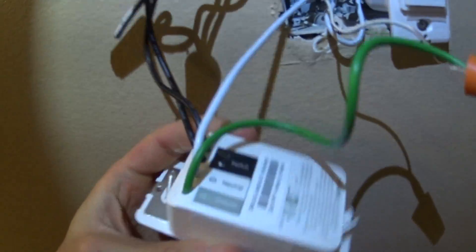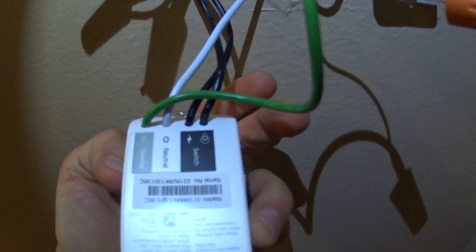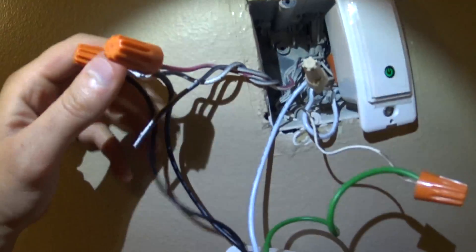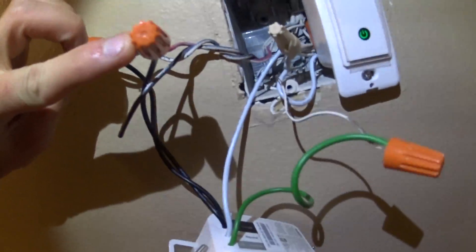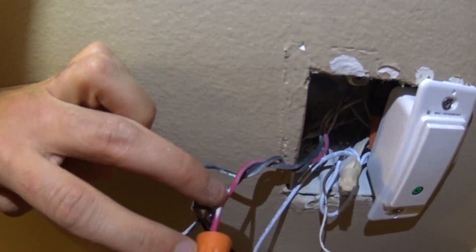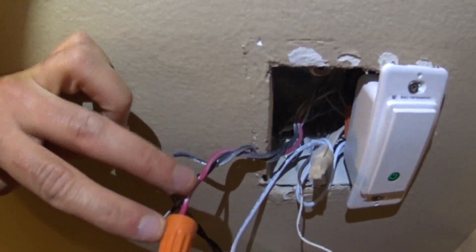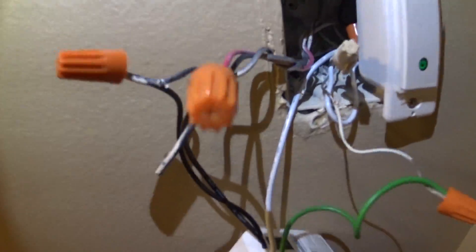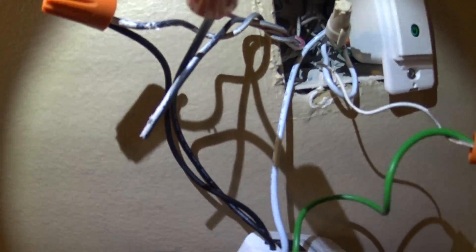So one leg is going to the hot, and then this one's hot. And then this one is in the down position at the other switch. This one obviously needs a wire nut, but I wanted to test it out prior to cleaning this mess up.